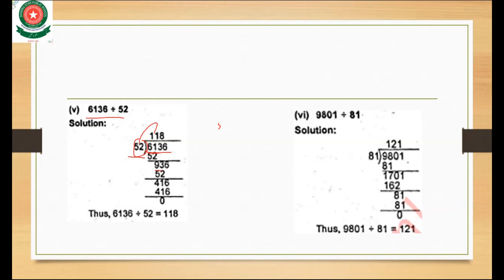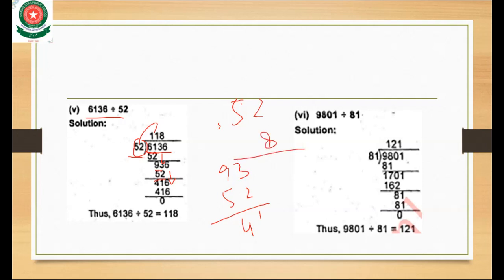We bring down 3, making 93. We multiply 52 again — 52 times 1 is 52. Subtracting: 3 minus 2 is 1 and 9 minus 4 is... we get a remainder. Bring down the next digit 6. Multiply 52 times 8 gives 416. So 416 minus 416 gives 0. The answer 123 comes.